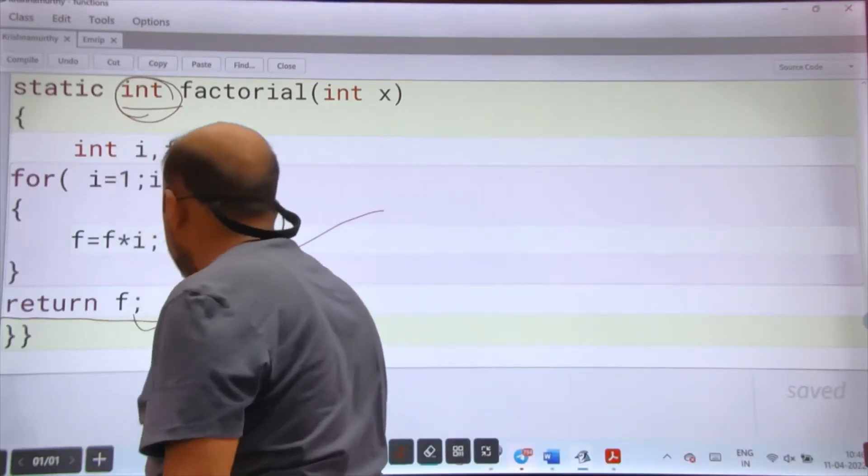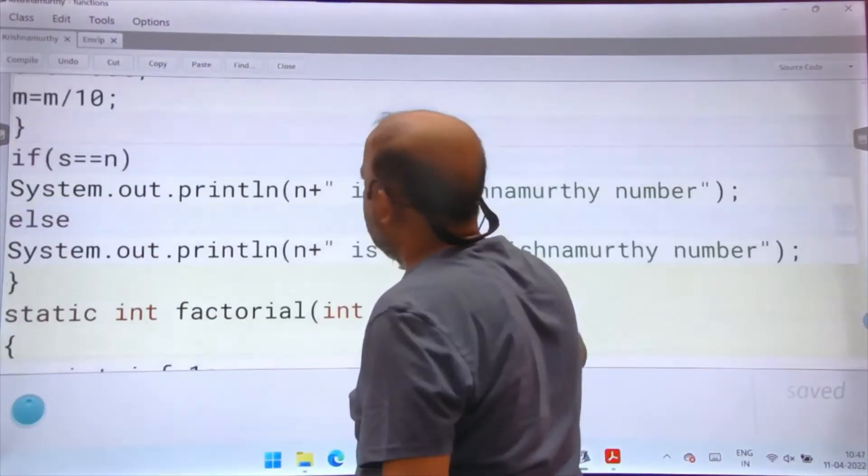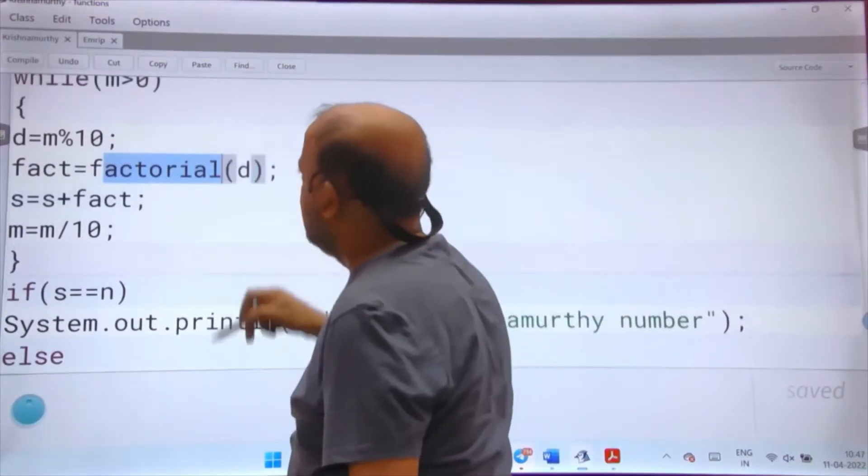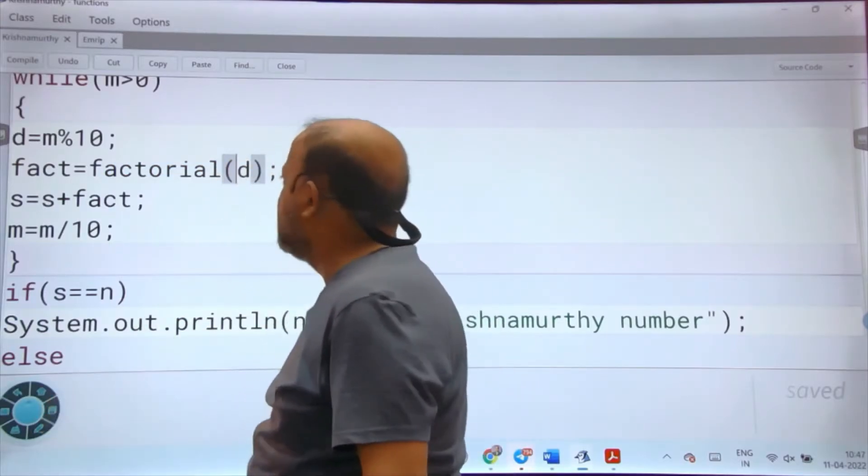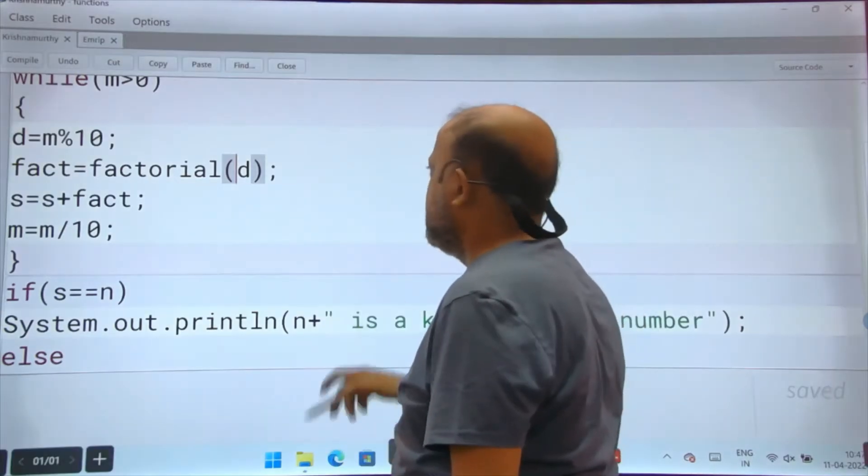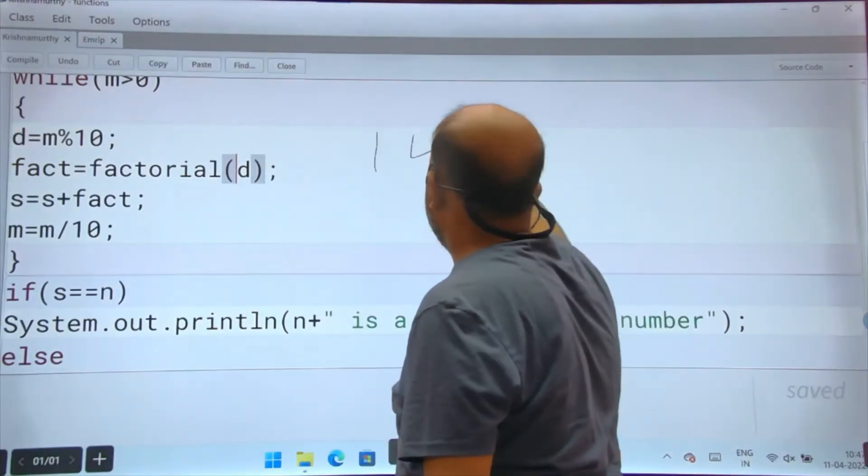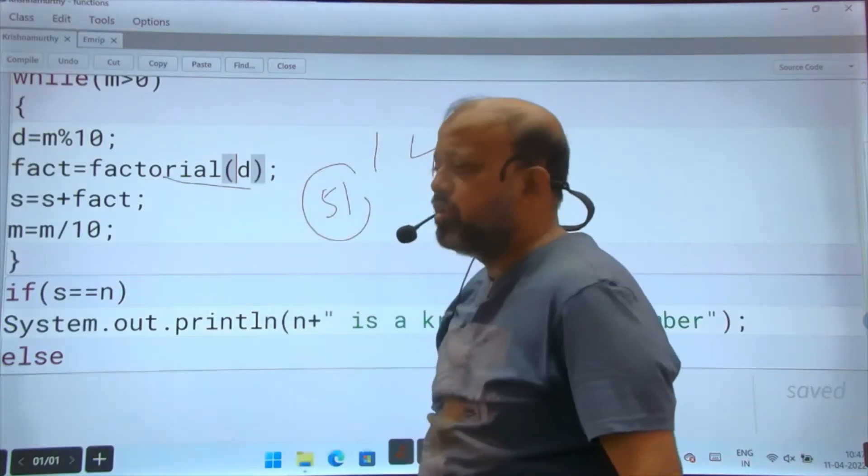Where is it going? It is going where it is called. Here. If you have a three digit number, this function will be called thrice. If the number is 145, first time it will get 5, that function is called for 5 factorial.